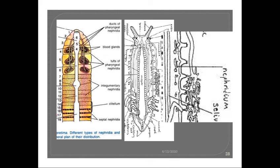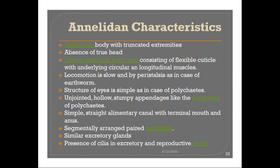Another annelidan feature is the presence of cilia in the excretory and reproductive ducts, which is yet another annelidan character we can find in Peripatus or Onychophora. These are the main annelidan characters present in Peripatus, and these particular affinities are important.